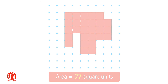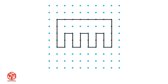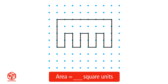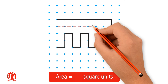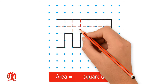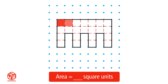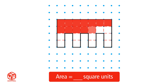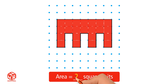Let's try another example. Find the area of this figure. Draw lines to show each square unit, then count the unit squares in the figure. The area of this figure is 22 square units.